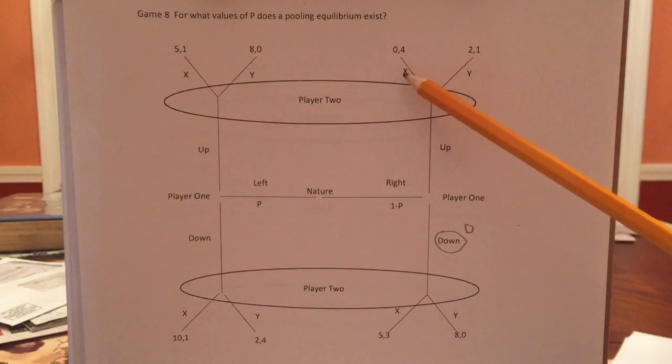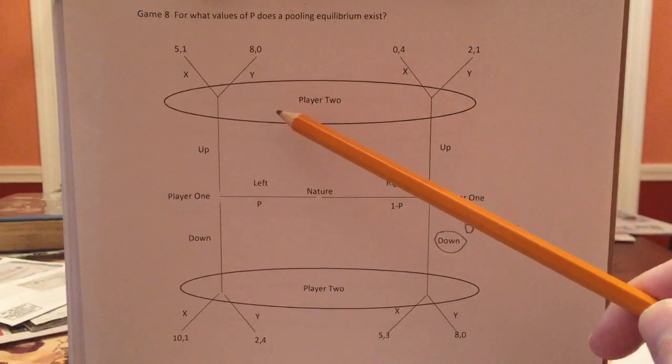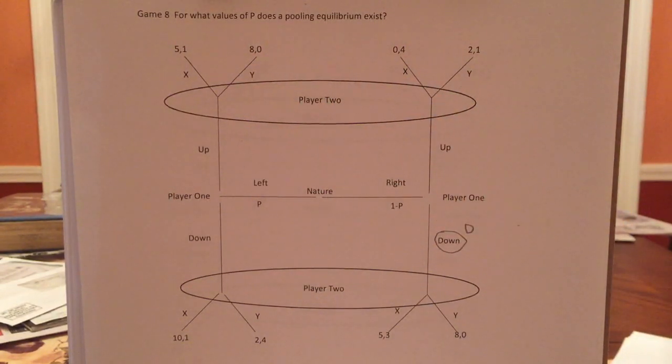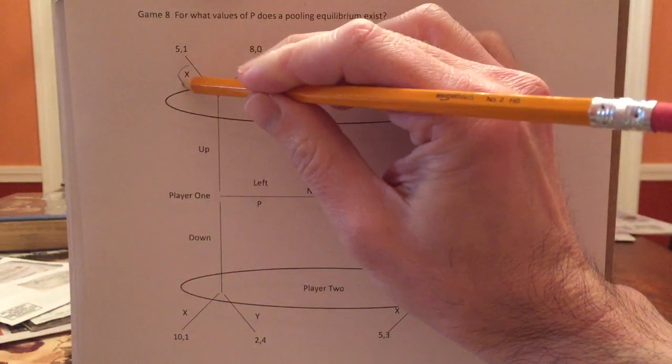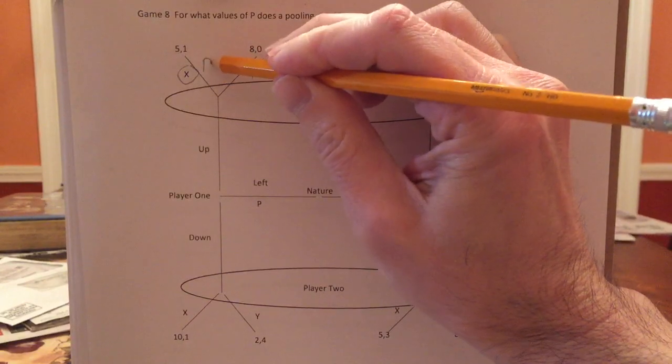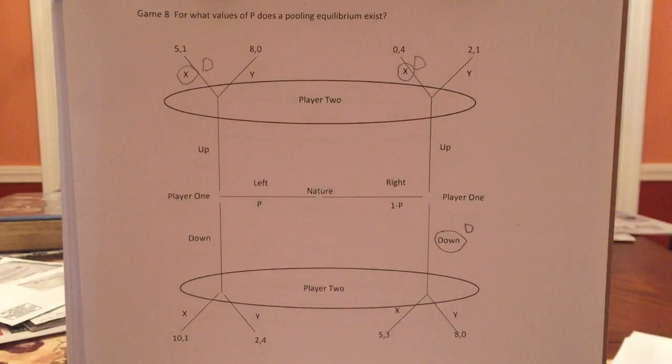And if you knew you were on the right, oh, you'd also want X. So player two has a dominant strategy because you want to play X if you were on the left or the right. So let's put a D here. And of course, this is the same X, right? You've got to do both. So we'll put a D here.